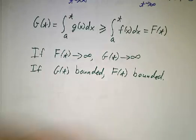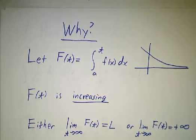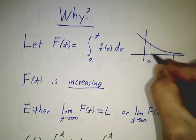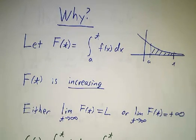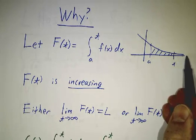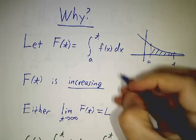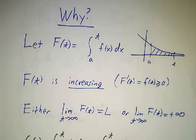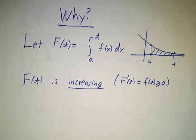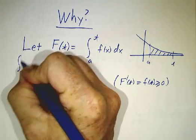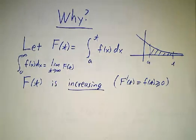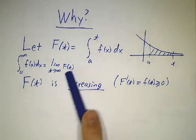So why does the comparison test work? Let big F(t) be the definite integral of little f from a to t, so F(t) represents all of the area from a to t. As t gets bigger and bigger, you pick up more and more area, so F(t) is an increasing function. By the Fundamental Theorem of Calculus, the derivative of big F is little f, which is positive — that's another way to see it's increasing. By definition, the integral from a to infinity of f(x) dx is the limit as t goes to infinity of F(t), so we want to see what happens to F(t) as t goes to infinity.